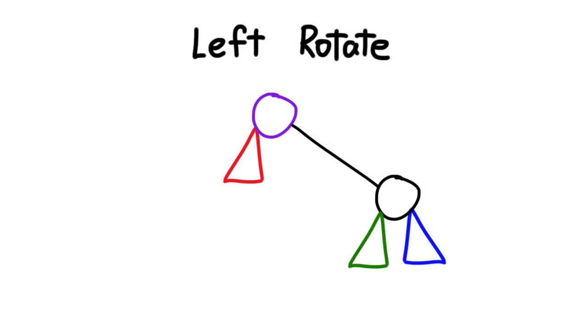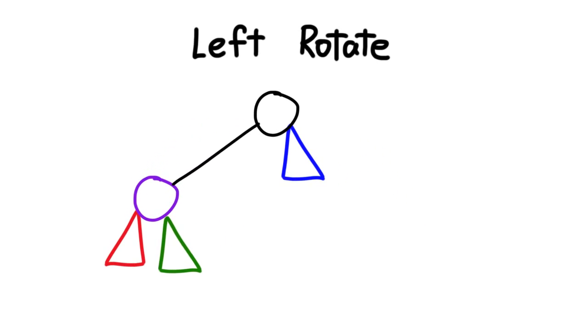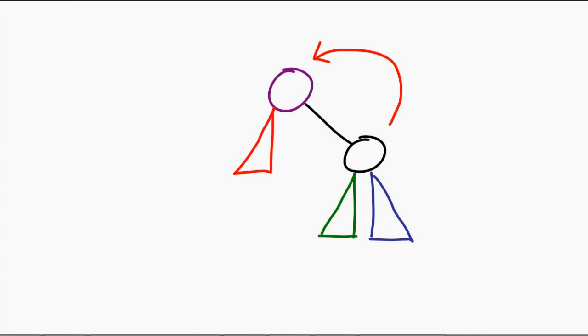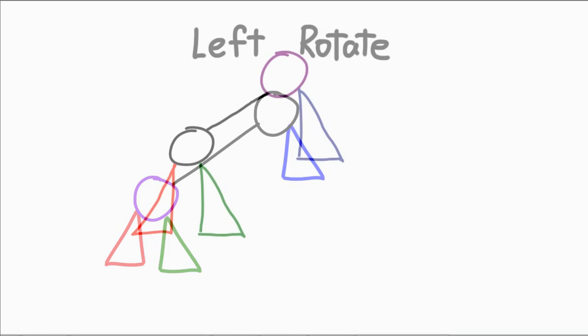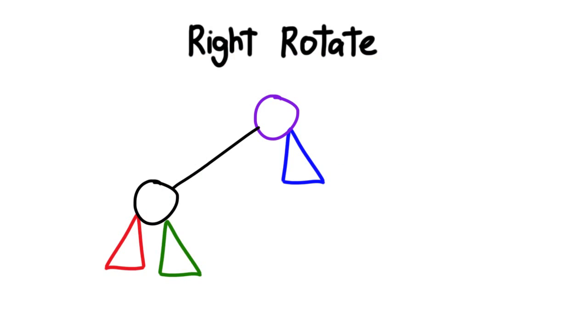There are 4 different cases, and each case requires its own action. To fix the imbalance, we have to use a combination of left and/or right rotations. So before we formally apply this, let us take a look at the actual rotations. A rotation looks something like this. When you have two nodes, a left rotation does this — the parent becomes the child, the child becomes the parent. Similarly, a right rotation does the same thing: the parent becomes the child, the child becomes the parent.